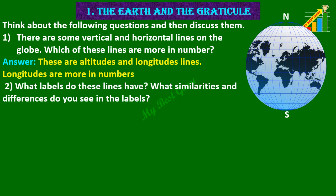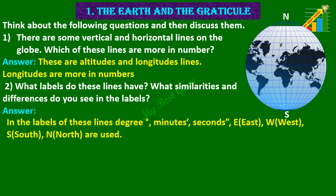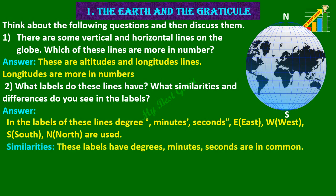2. What labels do these lines have? What similarities and differences do you see in the labels? Answer: In the labels of these lines, degree, minutes, seconds, E for east, W for west, S for south, N for north are used. Similarities: These labels have degrees, minutes, seconds in common.